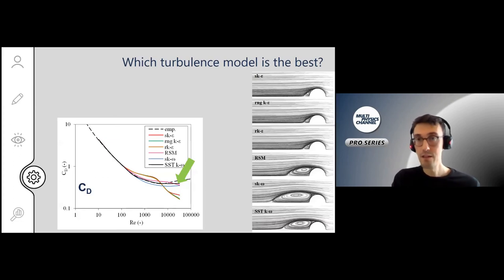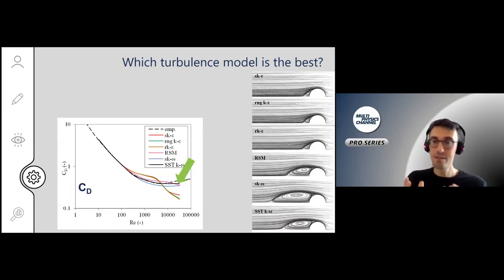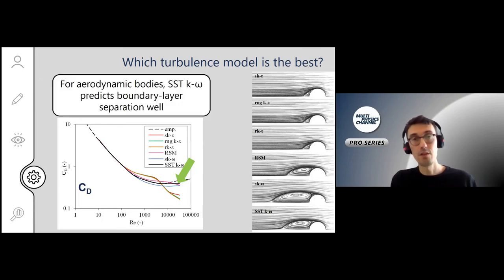Which turbulence model is the best? There is no real correct answer for that, as I will show you. Here you see the different flow fields around a single sphere, very simple, for different turbulence models, and you see the drag coefficient as a function of the Reynolds number. For this specific flow problem with an aerodynamic body where we have to capture the boundary layer separation points, you see that the SST k-omega model performs in this case the best, even at very turbulent regimes at higher Reynolds numbers. For aerodynamic bodies, SST k-omega predicts boundary layer separation well, and by that also the general flow field. It's designed to solve the boundary layer quite accurately.